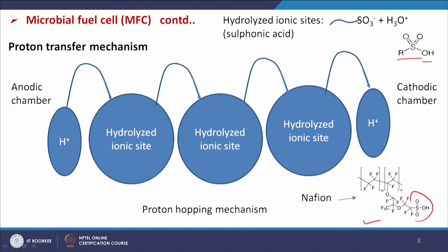From the anodic chamber, hydrogen is generated and comes to the surface of the membrane. The membrane has hydrolyzed ionic sites that take H⁺. RSOOH gives H⁺ plus RSOO⁻; that negative site takes the H⁺ again, and this type of conversion continues. Hydrogen moves from anodic to cathodic sites and ultimately reaches the cathodic chamber. This way of transfer of H⁺ ions is called the proton hopping mechanism.